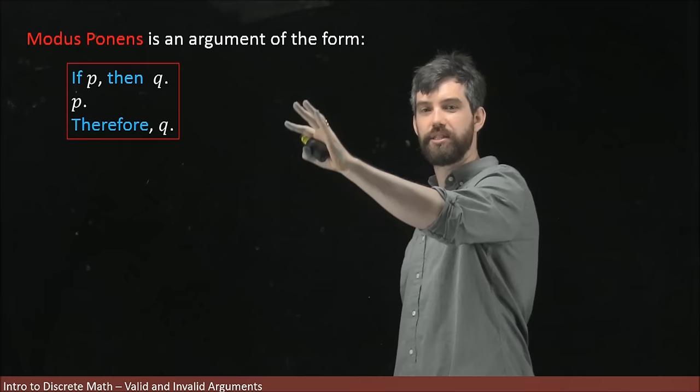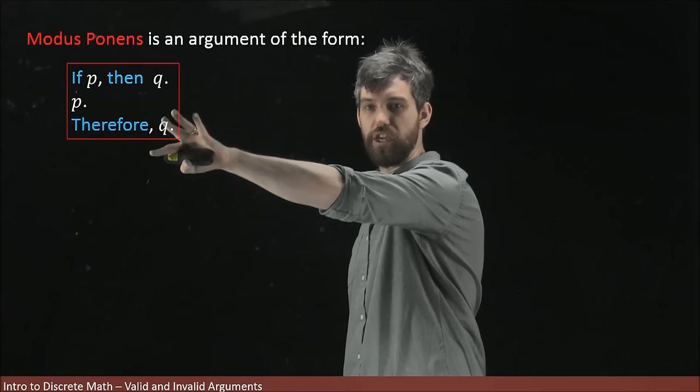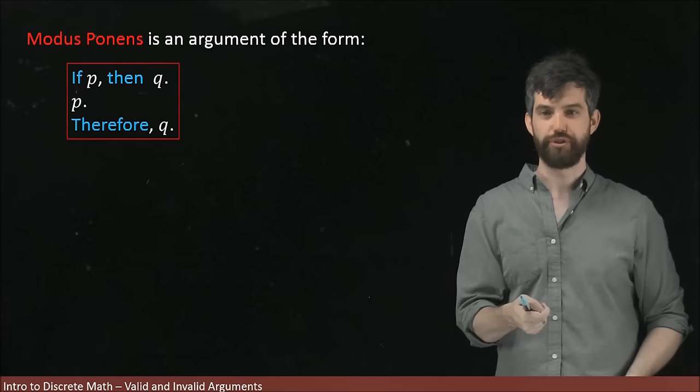So this is what we refer to as a logical form, or an argument form. And in particular, it's one that's got a name of modus ponens. Now, modus ponens, it's a fancy Latin name for it. But what it means is a logical structure of the form, if P, then Q. So if an assumption, then a conclusion. And then you take that assumption, and therefore you get the conclusion.